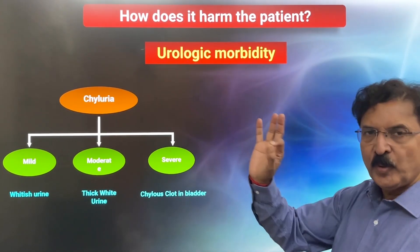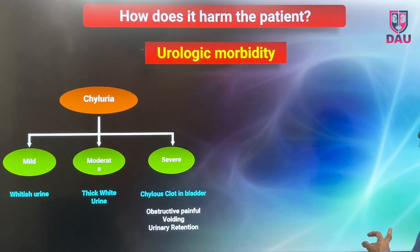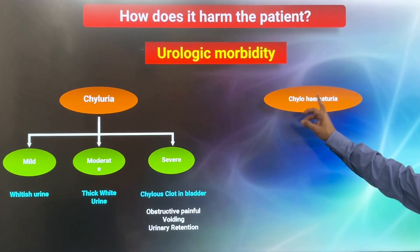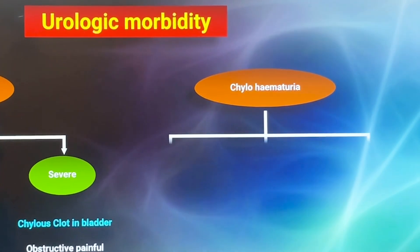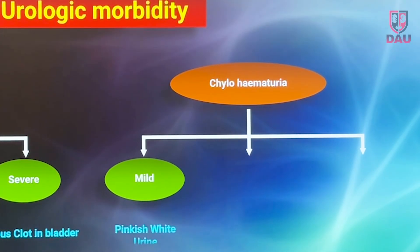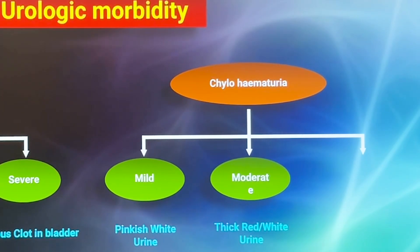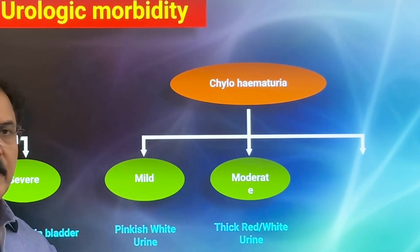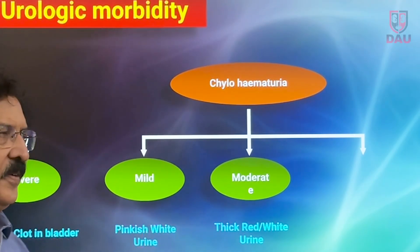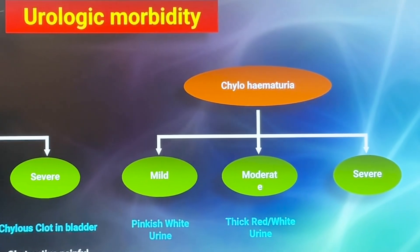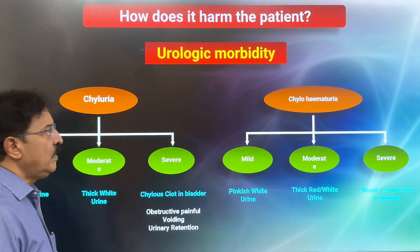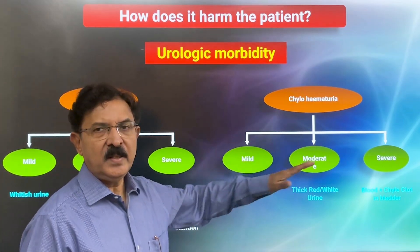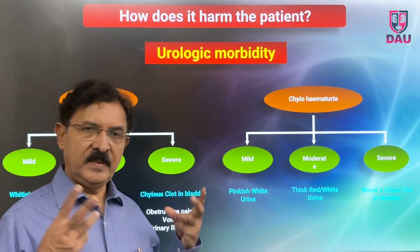Some patients have chylohematuria — both chyle and blood in the urine. In the mild type, urine looks pinkish-white. In the moderate variety, the urine has thick red and white urine, with significant amounts of both blood and chyle. In severe hematochyluria, patients have formation of both blood and chyle clots in the bladder. So pure chyluria and chylohematuria can each present in these three grades.